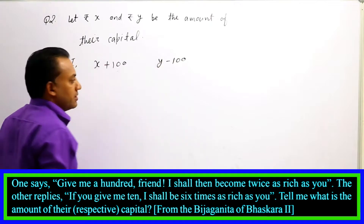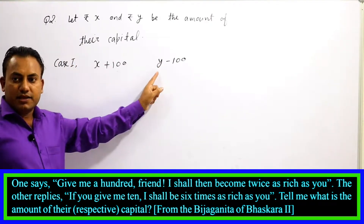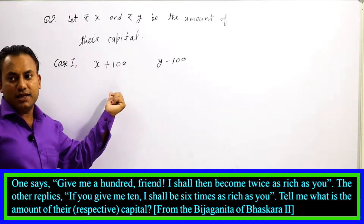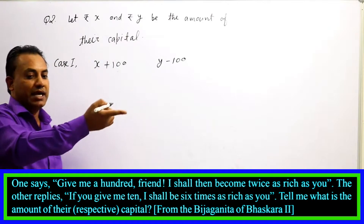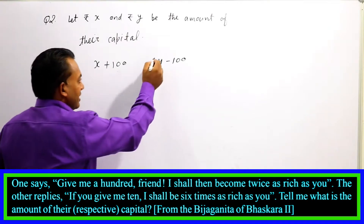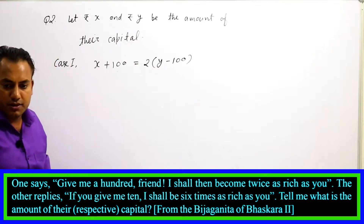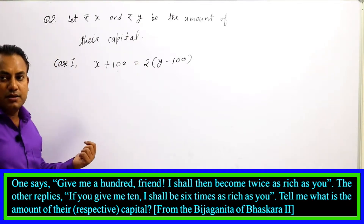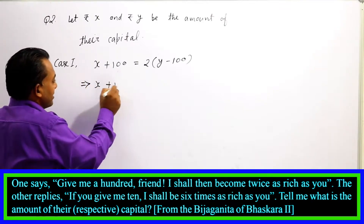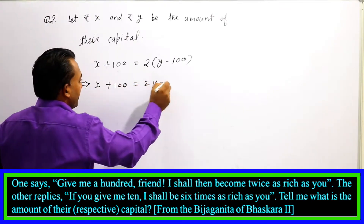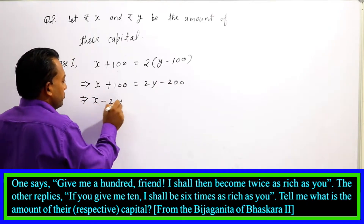If x takes 100 rupees from y, then x gains 100 and y loses 100. The condition says x will be twice as rich as y. So if we multiply y's remaining amount by 2, both sides become equal. This gives us: x + 100 = 2(y - 100), which implies x + 100 = 2y - 200, so x - 2y = -300.